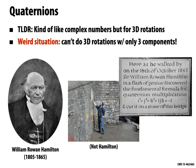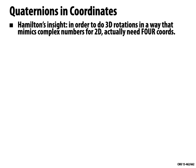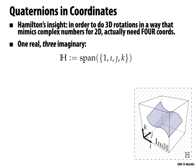Then one day he was going on a walk with his wife, headed to a party, and they passed over a bridge. Hamilton said, 'Aha, I have it — in order to represent rotations like complex numbers, I actually need four components and not just three.' He went down and scratched the fundamental formula for the quaternions into that bridge — which was probably really annoying because his wife was waiting for him and they were trying to go to a party.